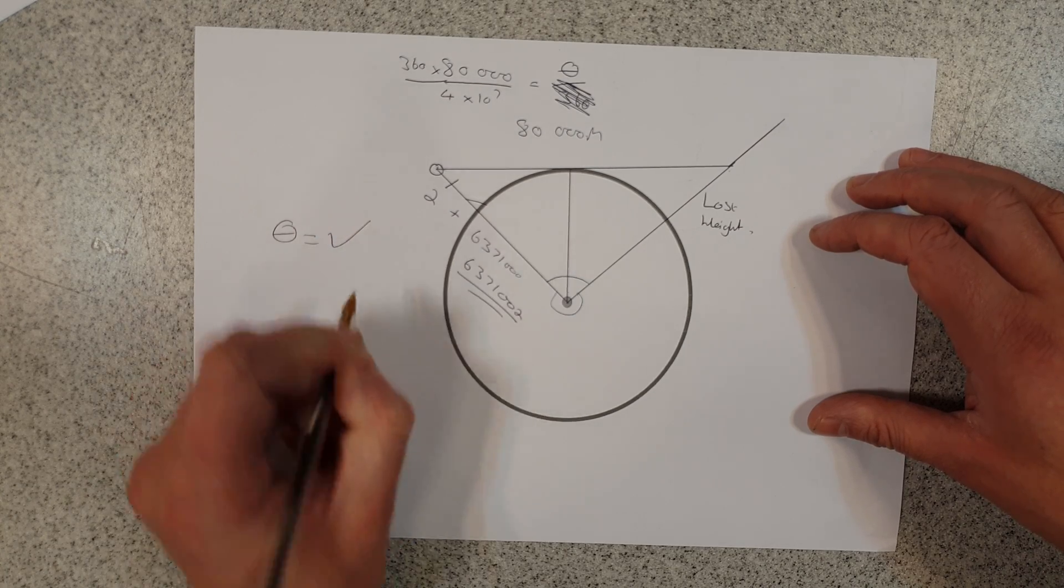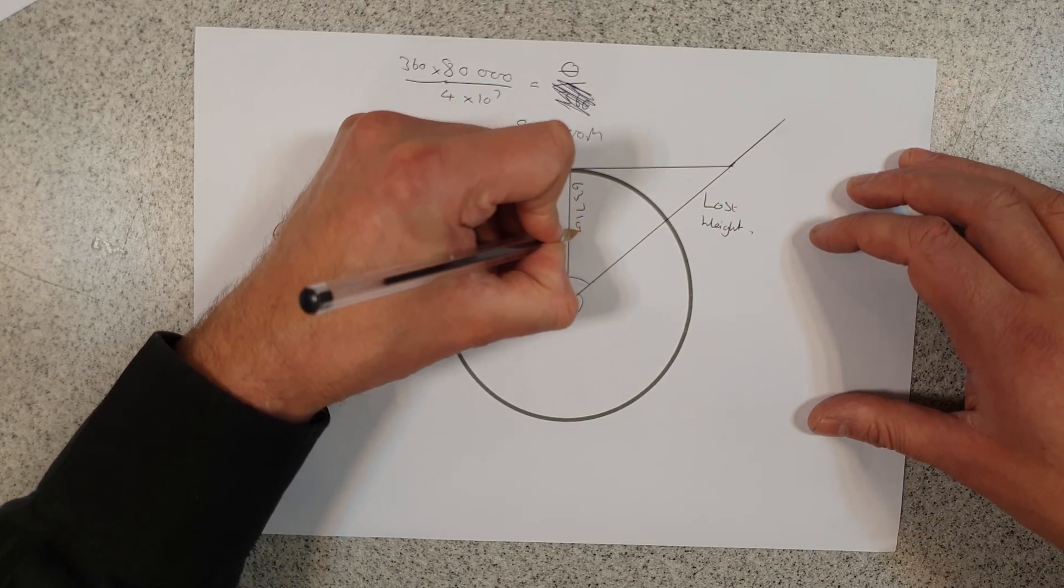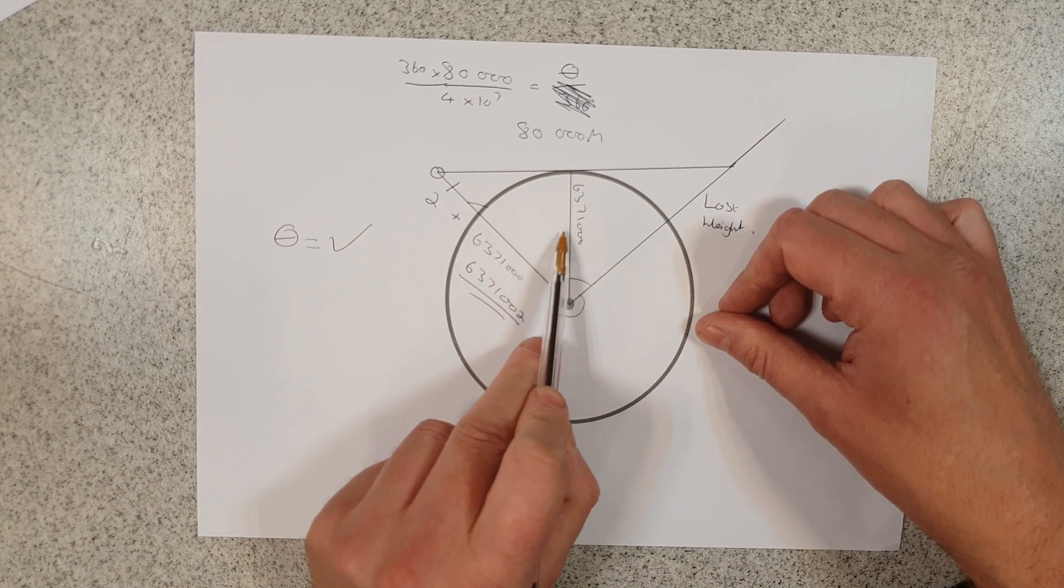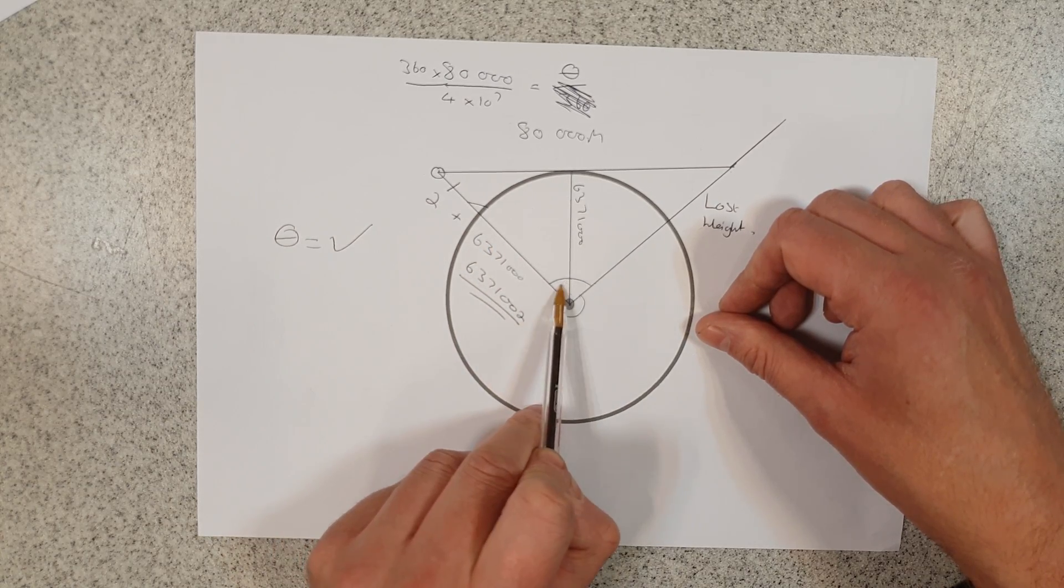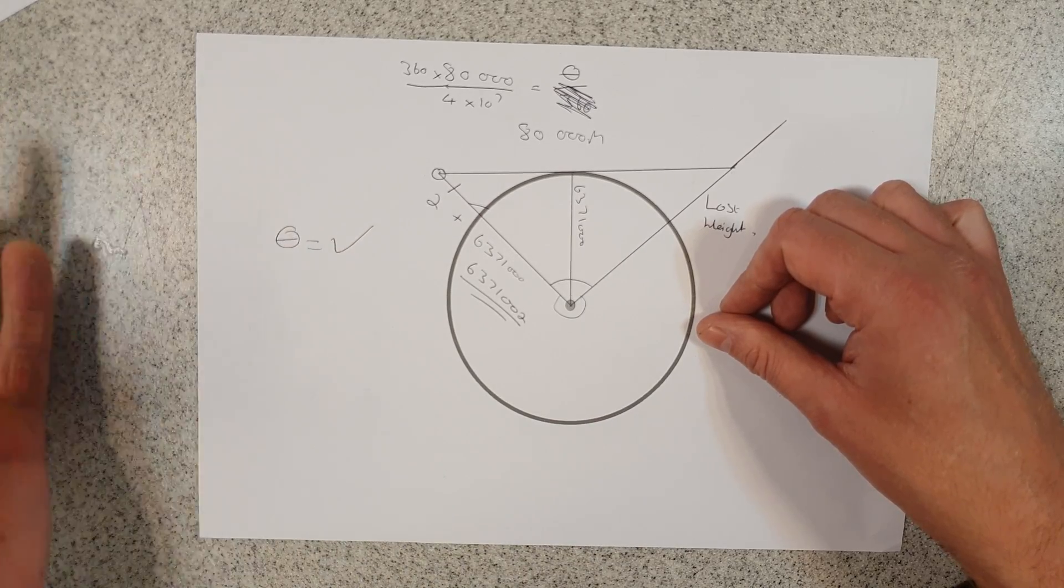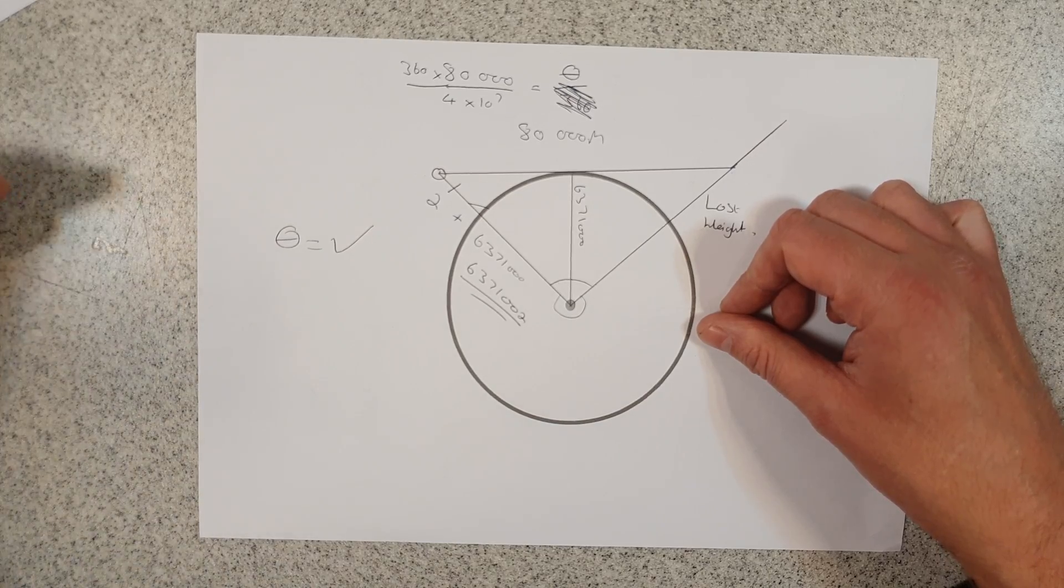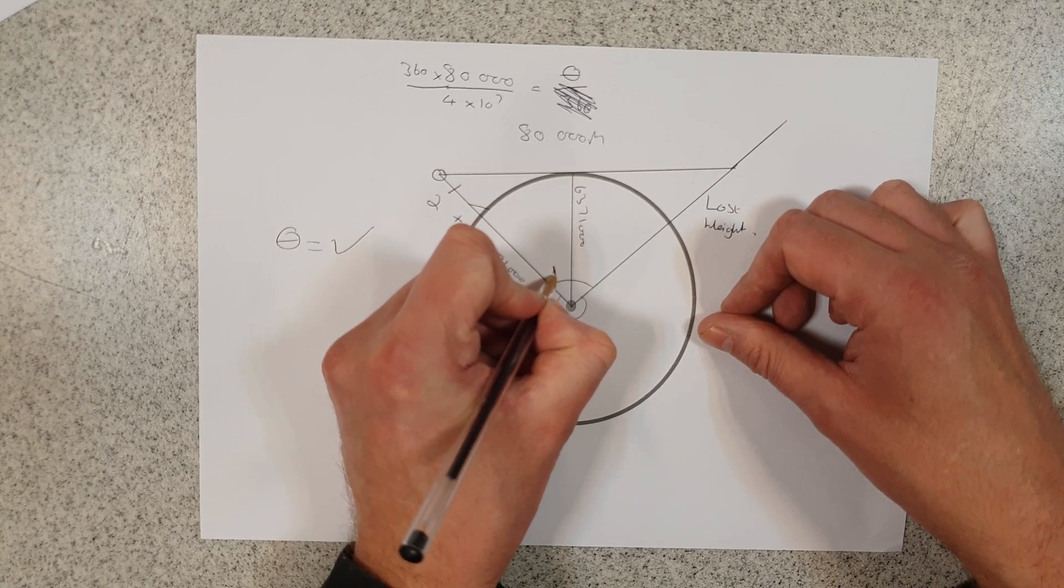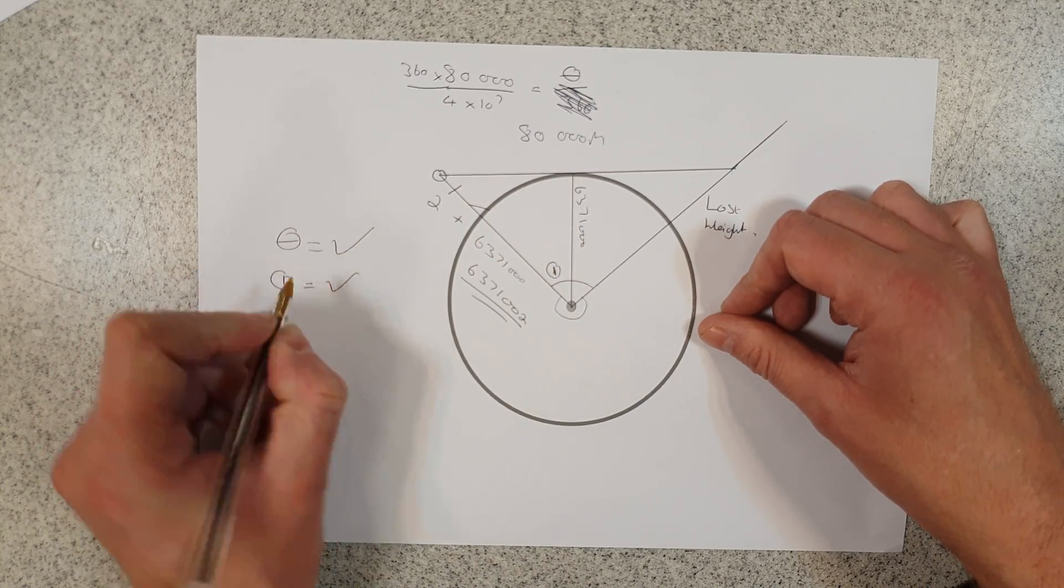So I know that my hypotenuse for the triangle is this. I know that this side here is the radius of the earth. So knowing these two—knowing the adjacent and the hypotenuse—I can work out this specific angle using the cosine. Now this isn't a lesson on trigonometry. If anybody wants a lesson on trigonometry, put it in the questions. But I'm going to call this angle 1. I can now work out angle 1.